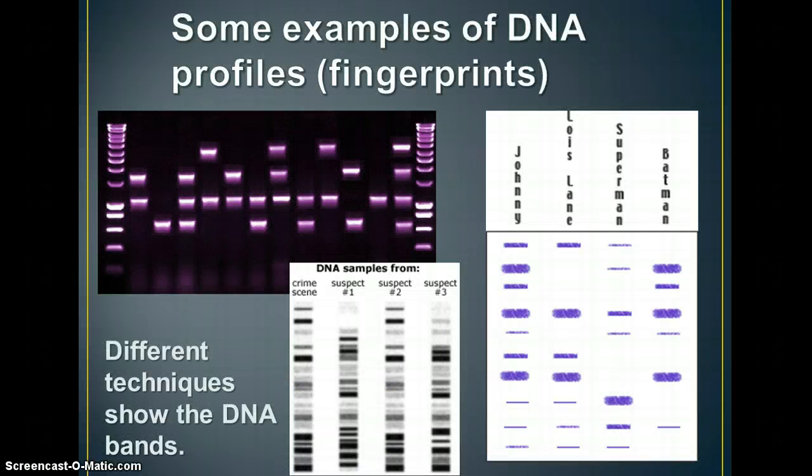Here are some examples of DNA profiles or fingerprints. You can see here this is another one of those fluorescing ones. Here we have one that's printed on paper that you can see the lines, the bands that match up here. Some of them have more bands than others, depending on what technique is used. Here's one that lets you look at Johnny and see whether his parents were. We know Lois Lane was his mother, obviously, but was his dad Superman or Batman? And you probably can tell by looking at the gels who the daddy is, and we'll talk about that in class.